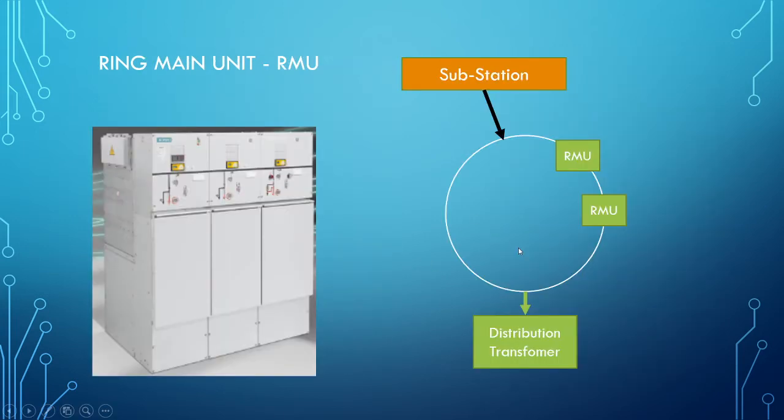When we go to RMU ring main unit, you see the closed box which has an isolator and the oil circuit breaker, everything inside the box. Everything kept inside the box and transformer is sitting adjacent to this box or on top of this box over the pole. Why we are going to this ring main unit?